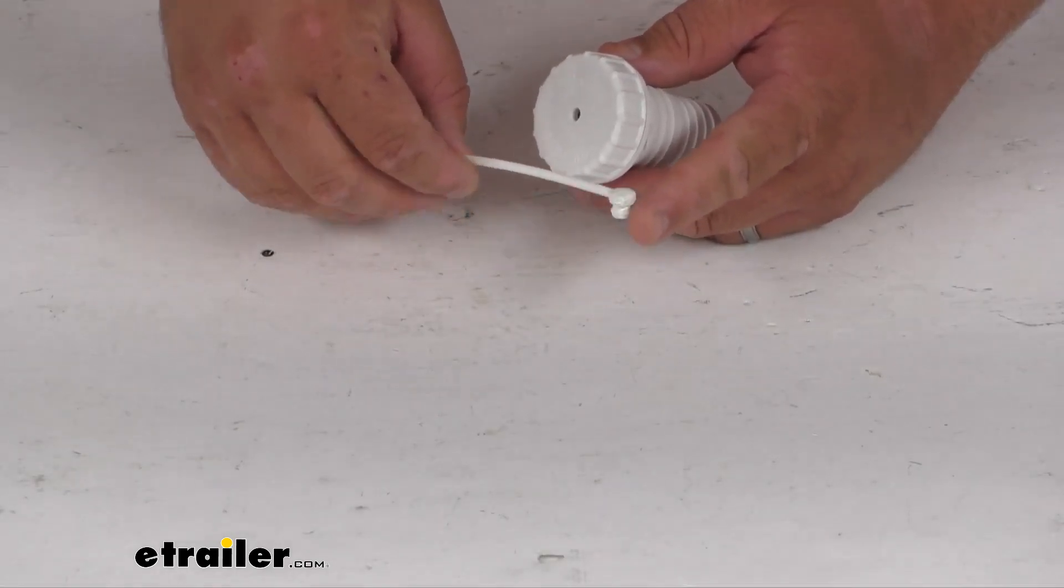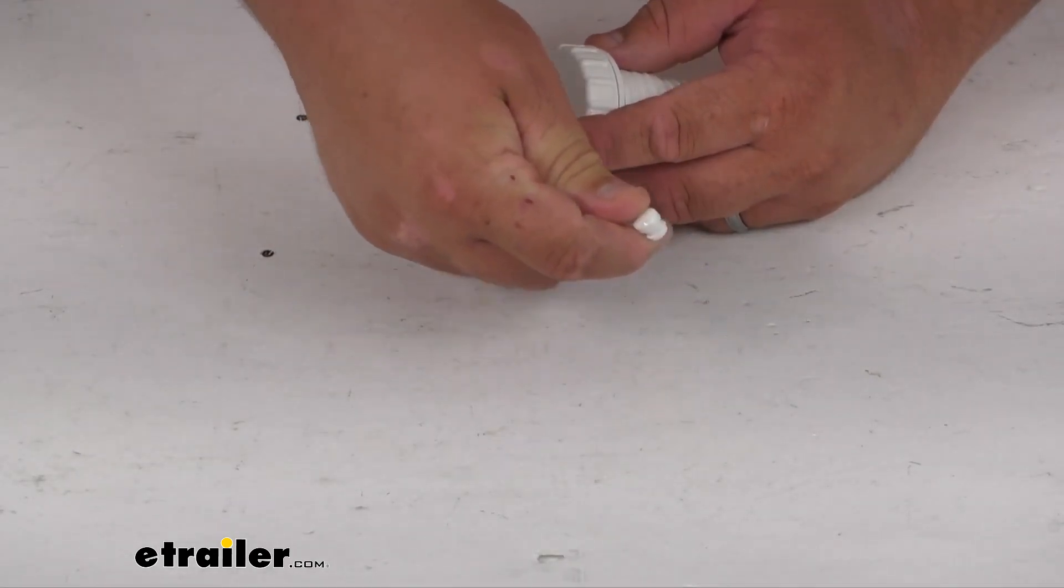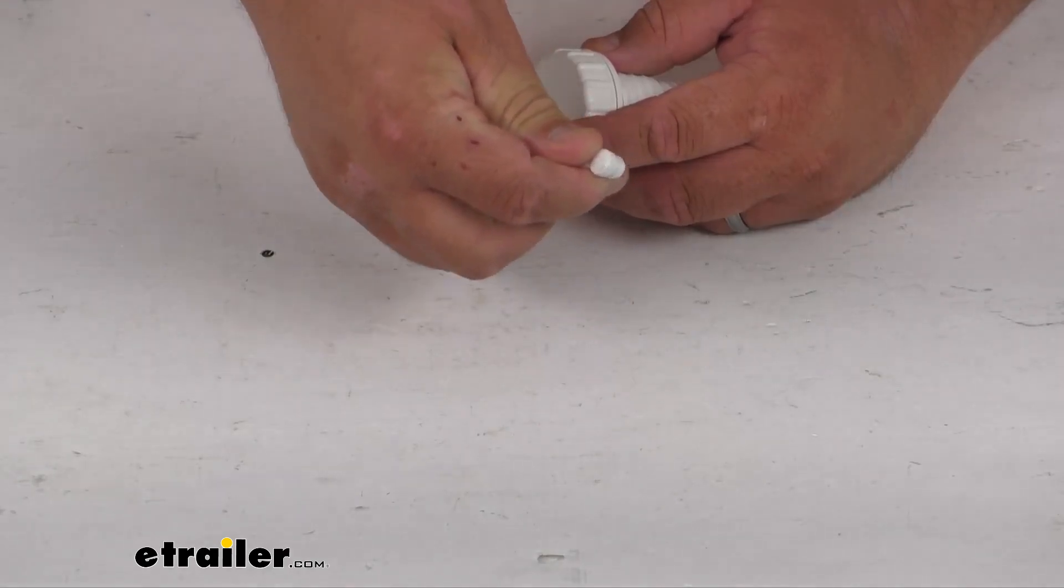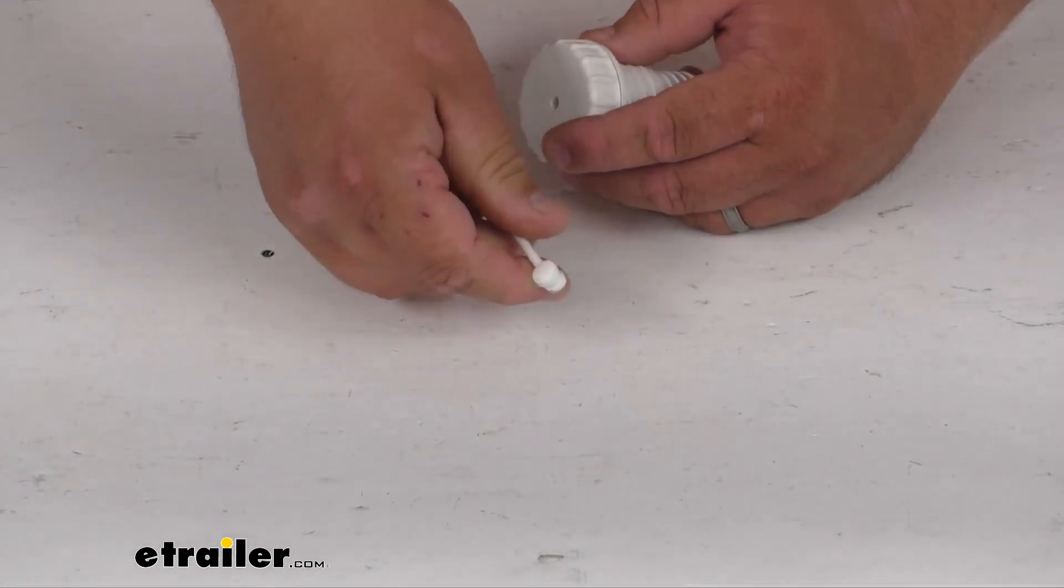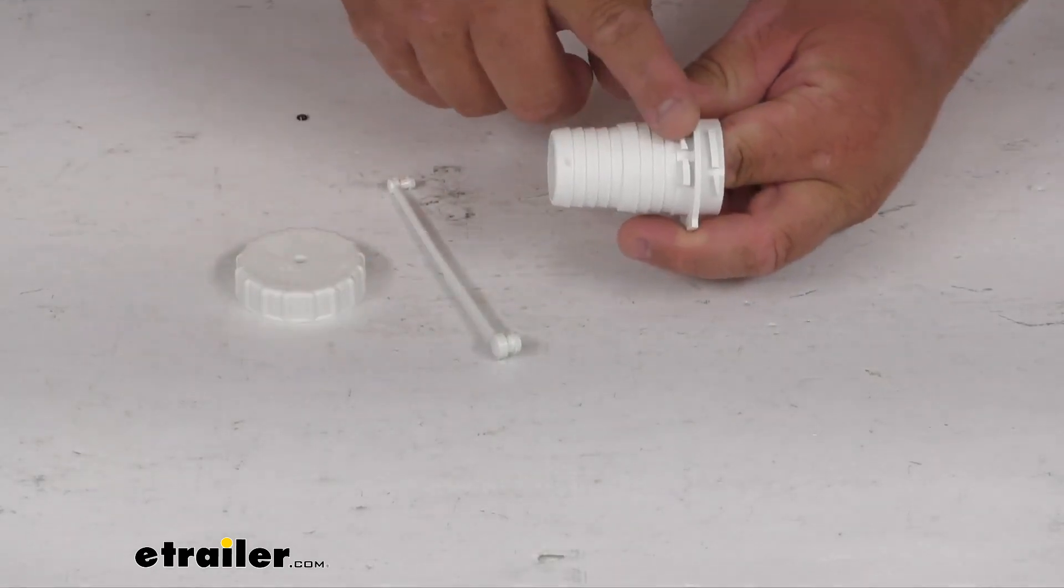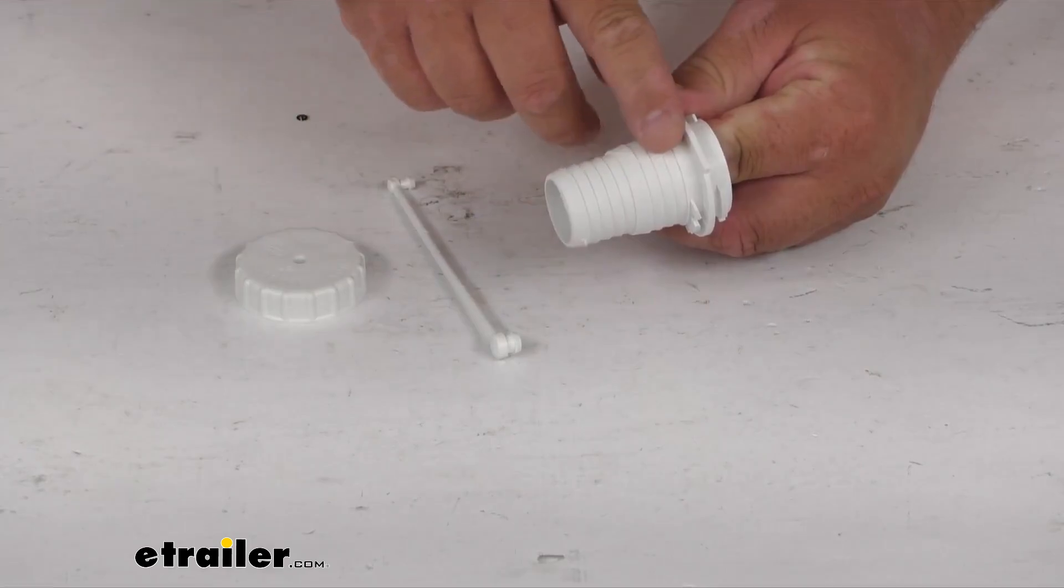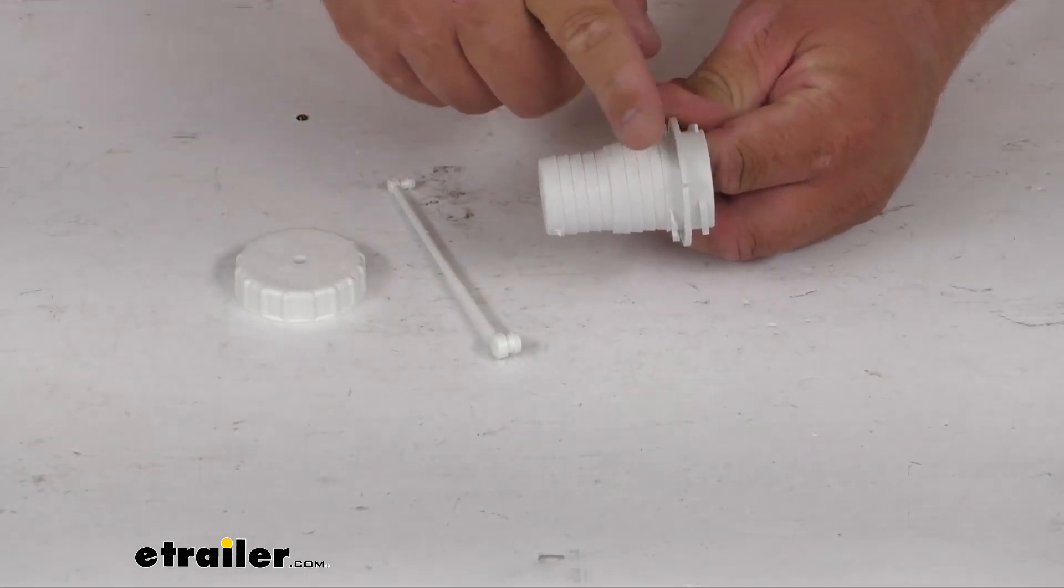And then this other side here will actually pop into a hole inside that gravity fill apparatus compartment. The spout's got two different sizes here on the barb fitting - you could do one and a quarter inch or one and three-eighths inch water hose.